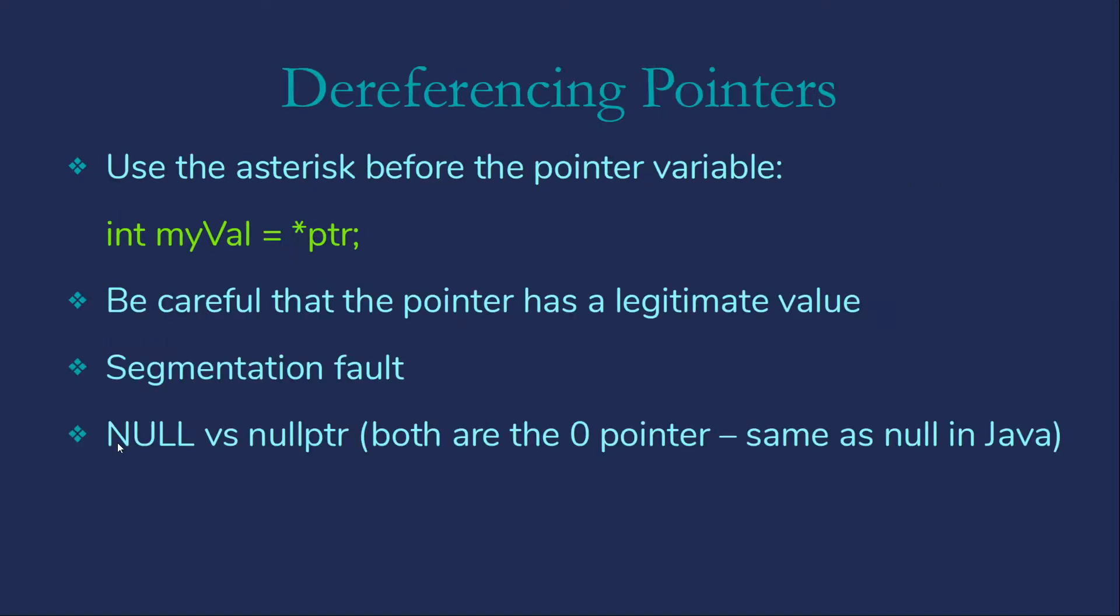If we're going to use pointers, we do want to get at the values they point at. As I mentioned, we have to explicitly dereference them. The way we're going to do that is we're going to use that same asterisk, but put it before the pointer variable. Here I say myVal is assigned star pointer. What that's going to do is copy whatever value pointer is pointing at and store it into the myVal variable.